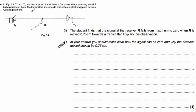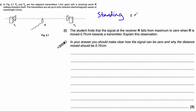Part B describes a situation with two transmitters, T1 and T2, emitting electromagnetic waves of wavelength 3 centimetres. The student finds that the signal at the receiver falls from maximum to zero when it's moved 0.75 centimetres towards the transmitter. This pattern of loud and quiet signals illustrates a standing wave.